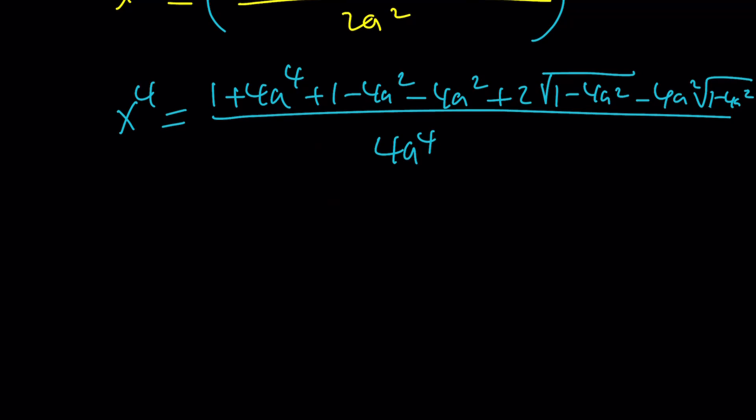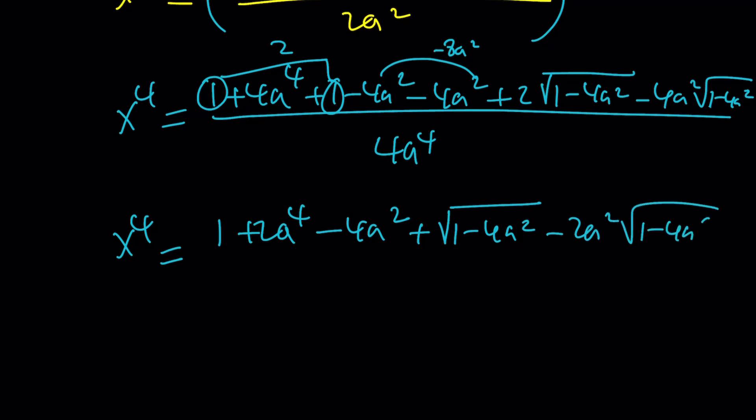So this can be simplified as well. For example, these two are like terms, these two are like terms, so on and so forth. And think about it. This is going to give you a 2. This is going to give you a negative 8a squared. And then everything can be divided by 2. So in the simplest form, it's going to give you 1 plus 2a to the fourth, because I divided by 2 minus 4a squared plus square root of 1 minus 4a squared minus 2a squared times the square root of 1 minus 4a squared. All of that is divided by 2a to the fourth. So this is x to the fourth power.